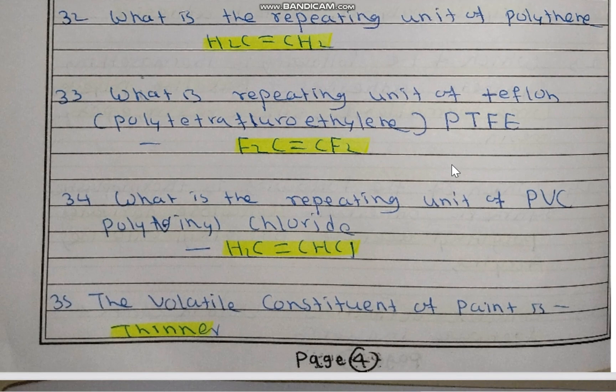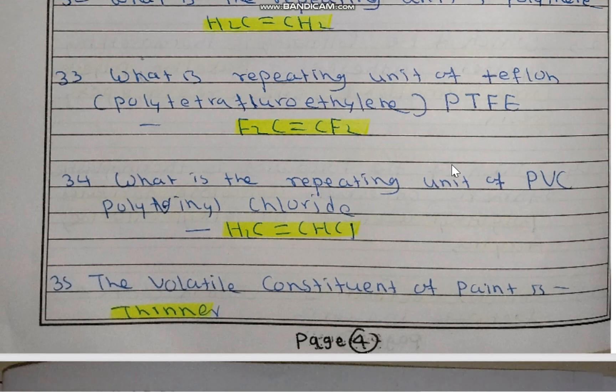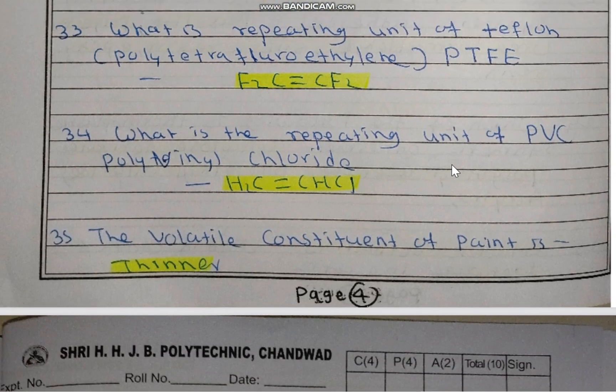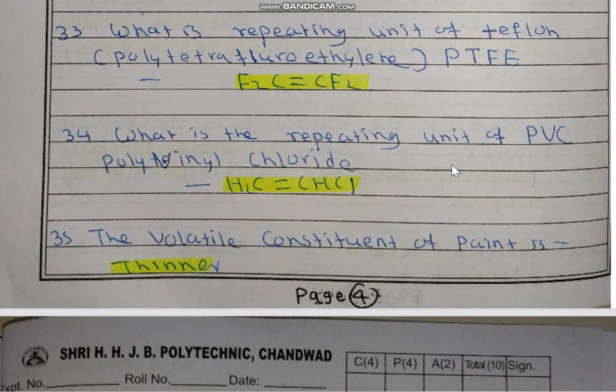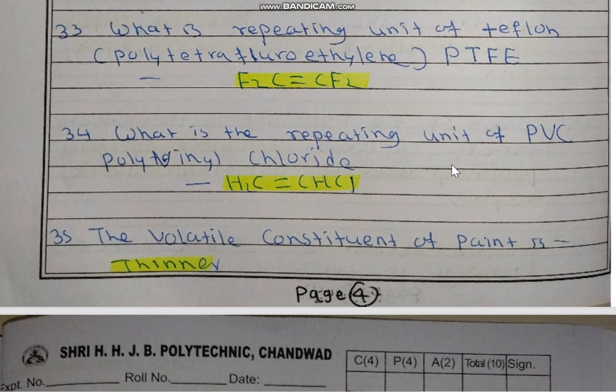The repeating unit of Teflon is polytetrafluoroethylene. It is known as Teflon and tetrafluoroethylene is its repeating unit.